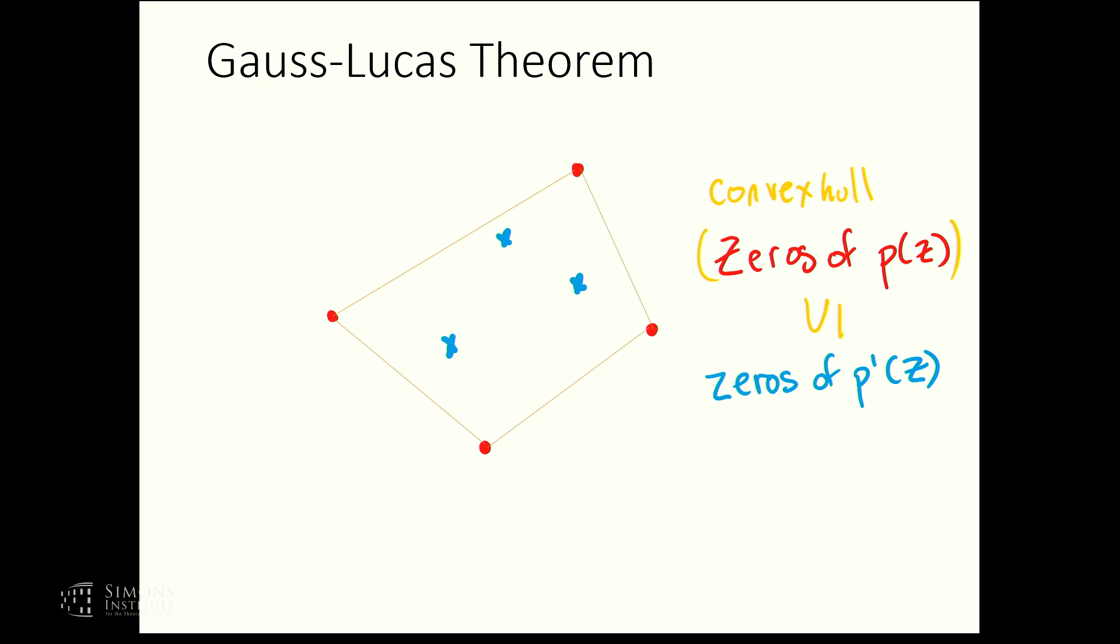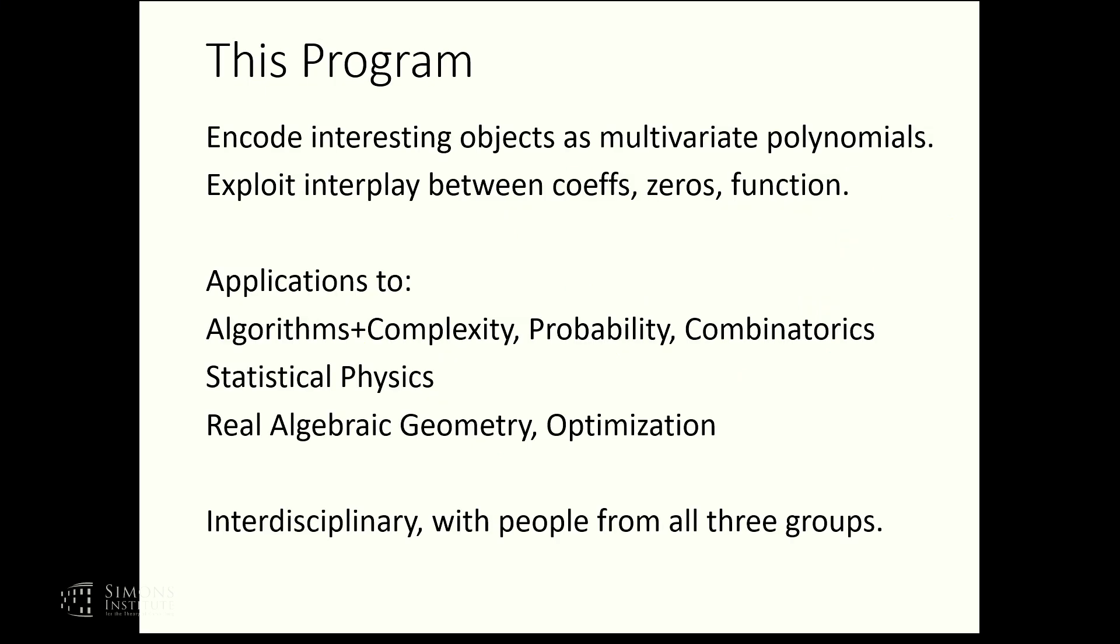That's the simplest example of an interesting theorem in this area. But this is the type of thing that's studied in this field. You apply some transformation to one side of this picture. What happens to the other side? So this is an old field. Our program is about applying this perspective of polynomials and these transformations on polynomials and their zeros to study phenomena in computer science.